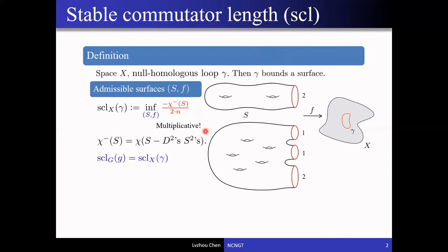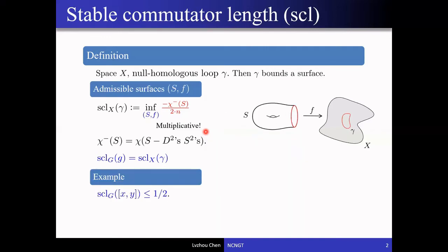One can show that the stable commutator length actually only depends on the fundamental group G of the space X and the group element g representing the loop gamma. As a concrete example, when gamma is a commutator of two elements x and y, we can realize the once-punctured torus as an admissible surface. The map takes the two standard generators of the once-punctured torus to x and y. With the correct orientation, the boundary wraps around gamma exactly once, making this an admissible surface of degree one. Plugging into the definition, the complexity is one half, so the stable commutator length of a commutator is always at most one half.